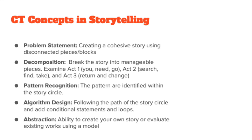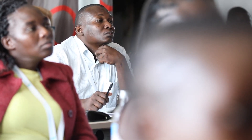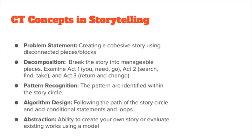In computational thinking, we start with a problem statement. What we're going to do is create a story together using an algorithm. We'll have a problem statement — building a cohesive story from disconnected pieces, random blocks with words on them. We're going to put those random words together to build a story. In terms of decomposition, we can think of it as Act One: you need to go; Act Two: search, find it, take it; Act Three: return changed. We'll use this model to build stories out of completely random pieces.